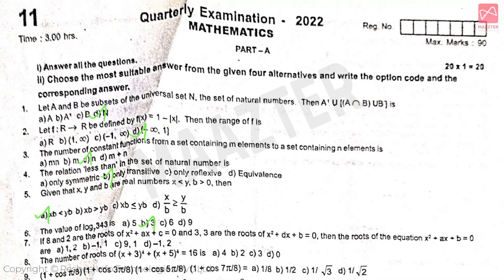If 8 and 2 are the roots of x² + ax + c = 0, and 3, 3 are the roots of x² + dx + b = 0, then the roots of x² + ax + b = 0 is answer option C. The number of roots of (x+3)⁴ + (x+5)⁴ = 16 is answer option B.